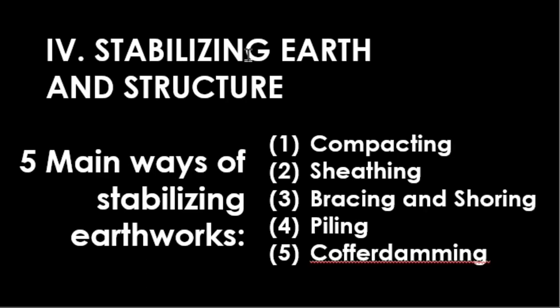Next we have stabilizing earth and structure. We have five main ways of stabilizing earthworks: compacting, sheathing, bracing and shoring, piling, and cover damming.